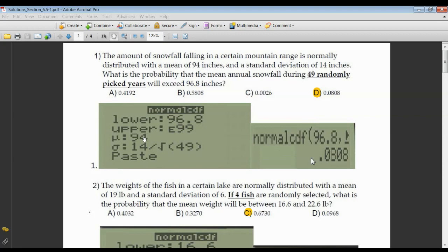And now the standard deviation becomes the original standard deviation, which is given to us as 14, divided by my n value. How many years are we talking about? In this case, 49. You could have calculated this in your head. It's 14 divided by square root of 49, which is 7. 14 divided by 7 is the whole number 2. But I let the calculator do it all. And the answer in this particular case, 0.0808 is spot on to letter D.